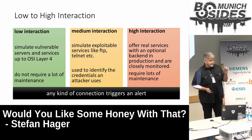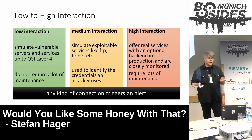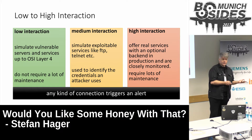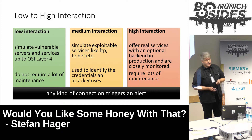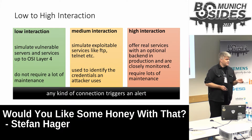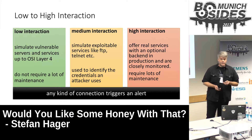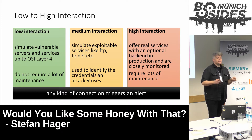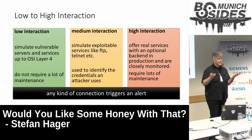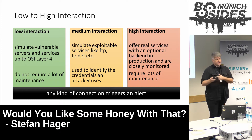Medium interaction honeypots take it to a slightly higher level because they will simulate services like FTP or Telnet, and they will also allow an attacker to connect and leave the credentials they wanted to use and maybe look at the files the attacker wanted to have. They are a little bit more maintenance. You can also put a high interaction honeypot on your network — very often these are machines connected to your back end. Just think about a high interaction honeypot as a really heavily monitored machine. They really try to find out what the attacker is going to do, but the attacker that connects to that machine won't really be content with a cat picture.